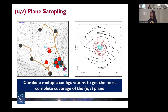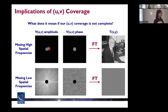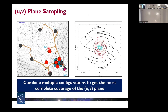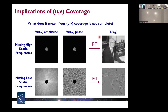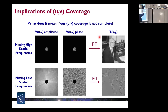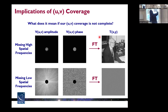We could combine all configurations to ensure we get the most complete UV coverage — this is the most ideal case. But you can see that even combining all configurations, there are still a lot of gaps; we are not really completely sampling the UV plane. We need to know what it means if our UV coverage is not complete. If we mask out all the high spatial frequencies in our visibilities and do an inverse Fourier transform, you see a very blurred image because we are only reconstructing the diffuse structure. You cannot see the details, only the blurred version.